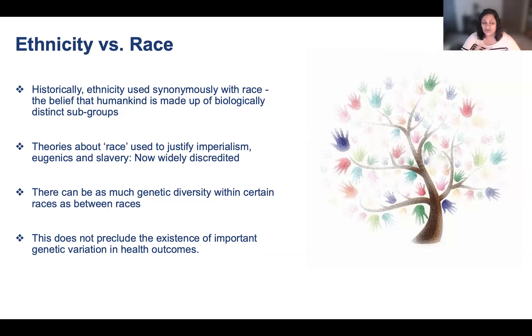We know that ethnicity is a much broader social construct, which can include some aspects of genetic diversity. But we know that genetic diversity can vary as much within races as across races, as people used to define them previously. And this does not preclude the existence of important genetic variations in health outcomes, which I will speak about a bit later on.